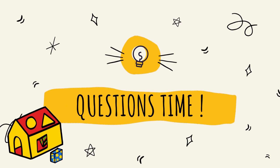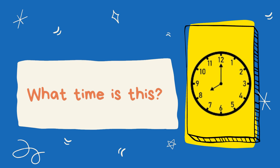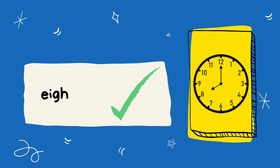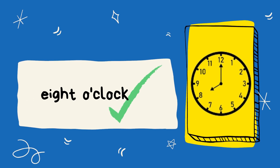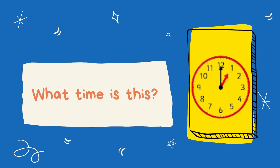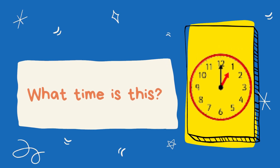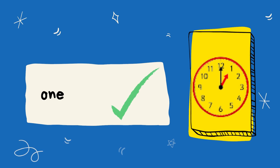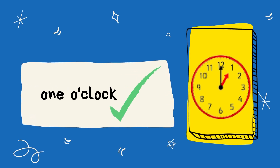Alright, it's question time! Look at the clock face carefully. The hour hand is pointing to number 8. So what time is this? It's 8 o'clock. Next, look at this clock face. The hour hand is pointing to number 1. So what time is this? It's 1 o'clock.